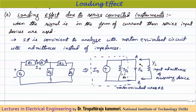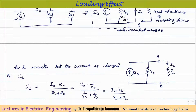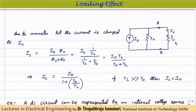Under ideal conditions, the current passing through the circuit is I0. To measure it, an ammeter with admittance YL = 1/ZL is connected across the terminals. When the instrument is connected, the current changes from I0 to IL. Using the current divider rule for a parallel circuit with admittances, IL can be expressed in terms of I0, Y0, and YL.